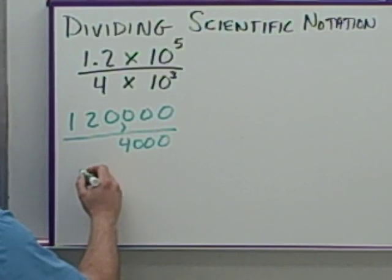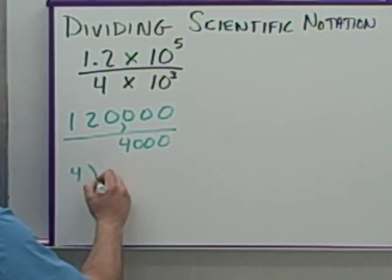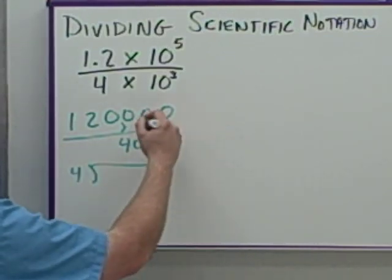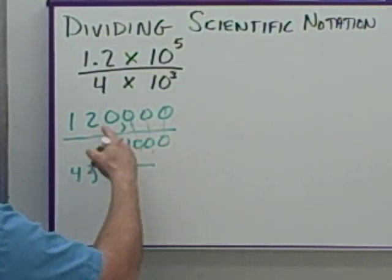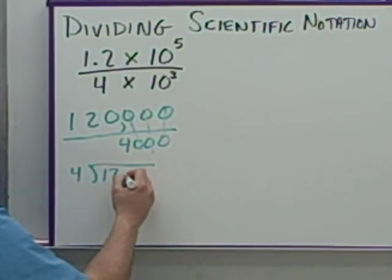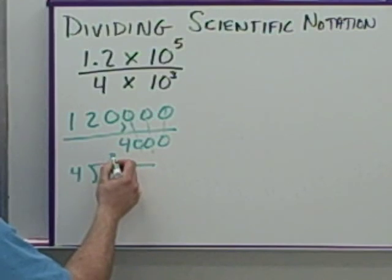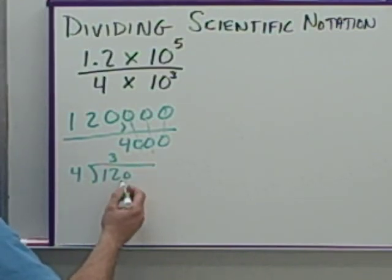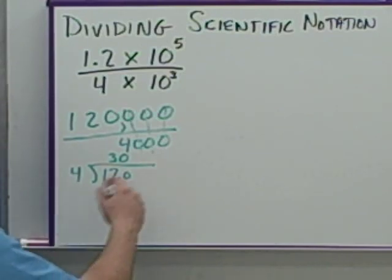Which would be 4 goes into... Well, the zeros will cancel out. Here's zeros, zeros, zeros. So you go 4 into 120. 4 goes into 12, 3 times. With nothing left over, 4 goes into 0, 0 times. So it would be 30. So the answer here is going to be 30.